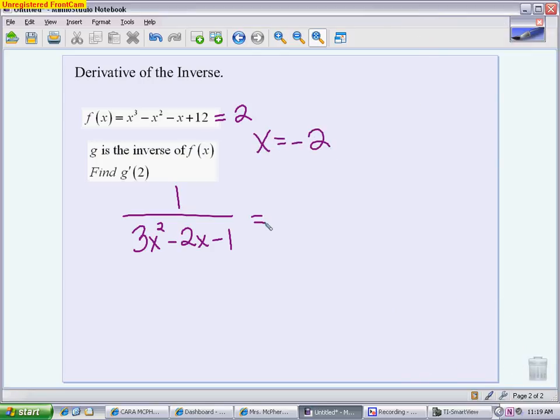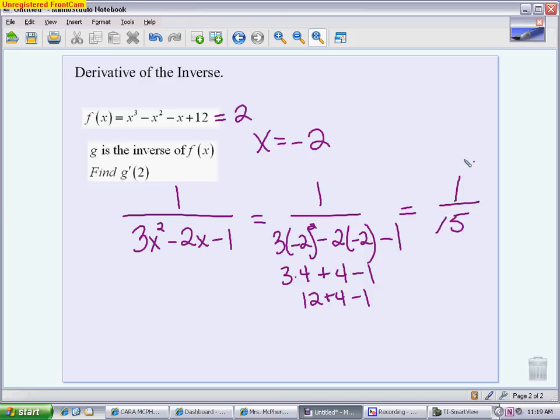So my derivative at 2, then, would be 1 over 3 times negative 2 squared minus 2 times negative 2 minus 1. So I can do this in my head. I can do it with a calculator. This is going to give me 3 times 4 plus 4 minus 1. So that's 12 plus 4 minus 1 gives me 15. So my derivative at 2 of the inverse is 1/15.